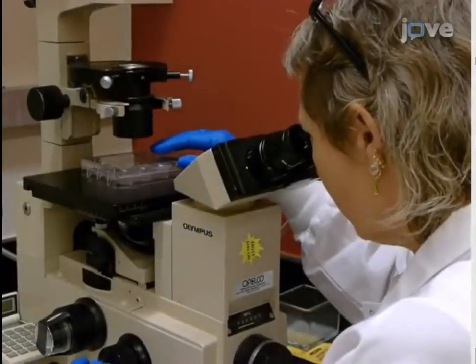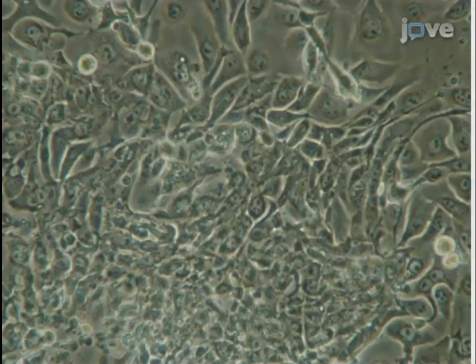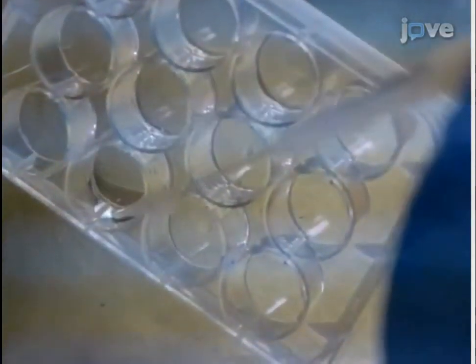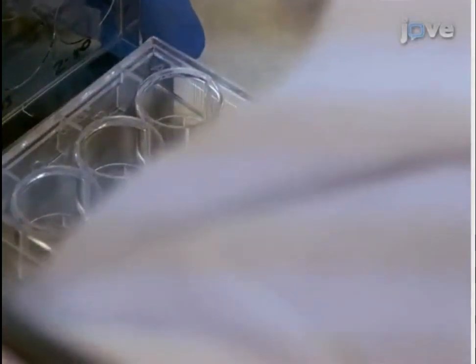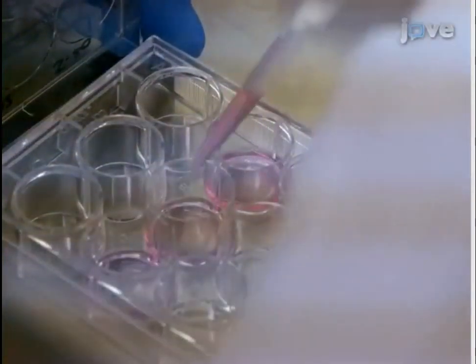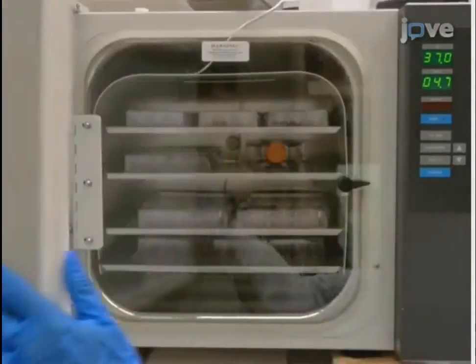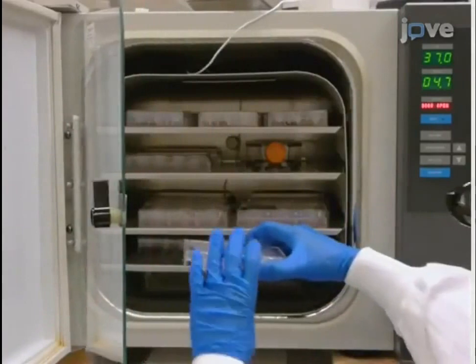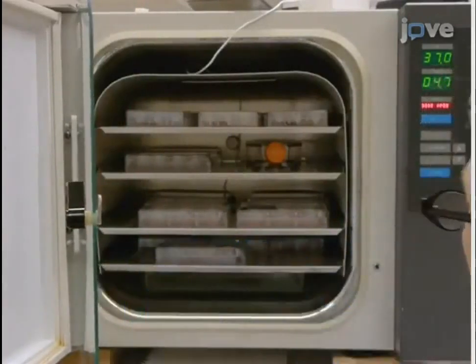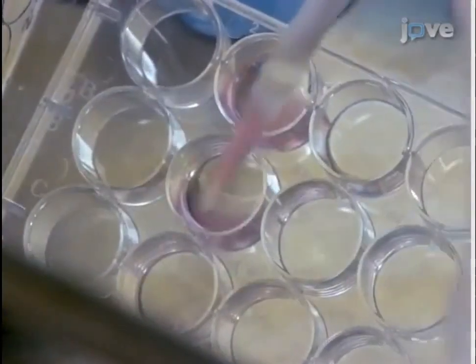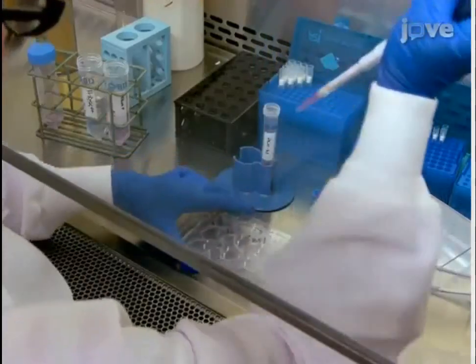The cells seeded in the 12-well plate are monitored daily until they reach 80 to 90 percent confluency, at which point they are transferred to flasks for expansion. Carefully aspirate media from each well, and then add 500 microliters of 0.25 percent trypsin per well. Keep the plate at 37 degrees Celsius until the cells are detached, which usually takes two to three minutes. Dislodge cells by pipetting up and down, and then transfer detached cells to a 15 milliliter conical tube containing soybean trypsin inhibitor or SBTI.